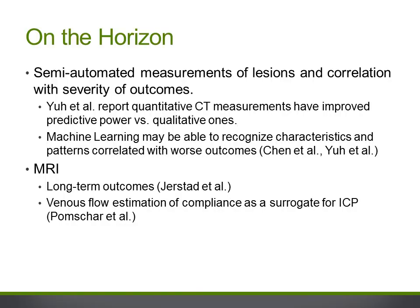In the future, quantitative imaging metrics using CT and MR, and possibly machine learning techniques, may be able to provide a better objective assessment of severity of an intracranial abnormality, ICP, and prognostic implications. MRI is typically used for more long-term applications and milder TBI.